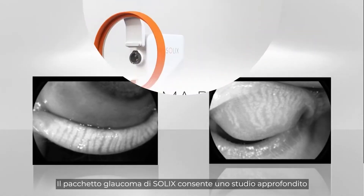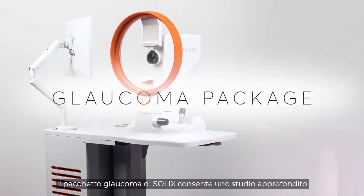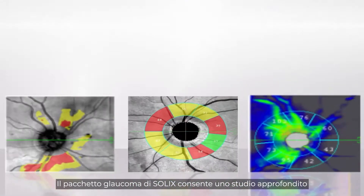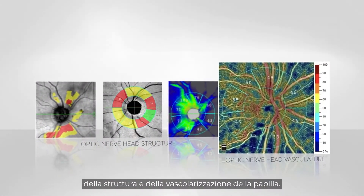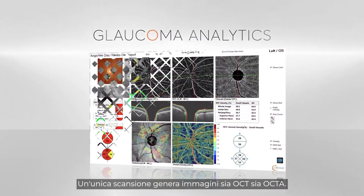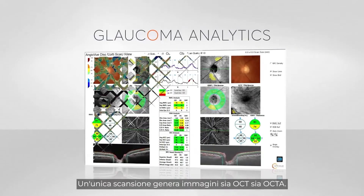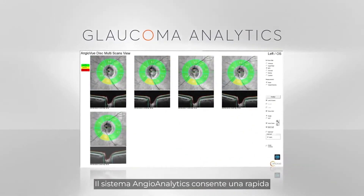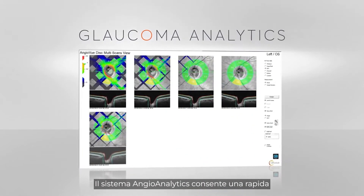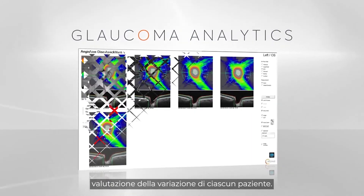The Solix glaucoma package powers in-depth analysis of the optic nerve head structure and vasculature. A single scan generates both OCT and OCTA images with angioanalytics metrics to help you quickly understand each patient's rate of change.